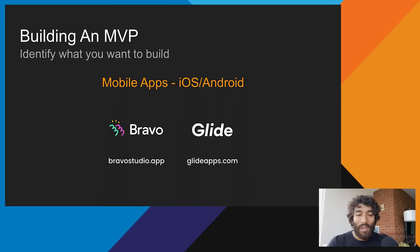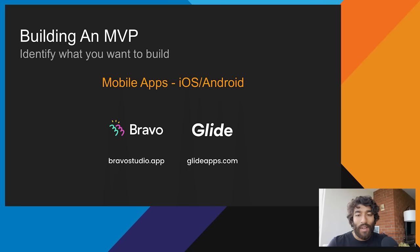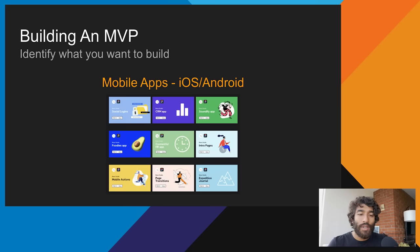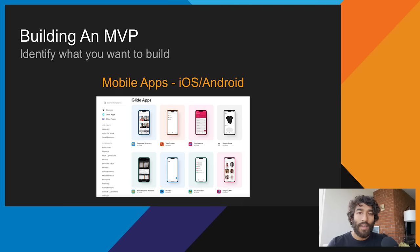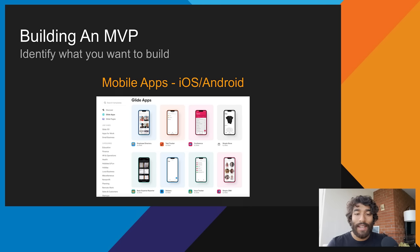Moving on to mobile app development in the no-code ecosystem, there are two main tools. The first is Bravo Studio at bravostudio.app — more of a visual designer where you use Figma or Adobe XD to design your app. Bravo Studio connects those elements together to make them into actions, basically leveling up your prototype to a functional product. The other app is Glide at glideapps.com, which allows you to create web-based but mobile-friendly apps to do powerful things like management tracking tools, a conference app, a workout app — and I've even seen a template for an Instagram clone.